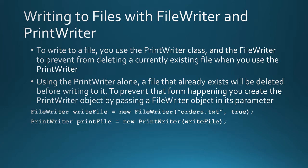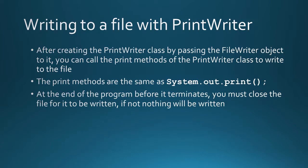To write to a file, you use the PrintWriter class, and then you use the FileWriter class to prevent from deleting a currently existing file when you use the PrintWriter. Using the PrintWriter alone, a file that already exists will be deleted before writing to it. To prevent that, you can create the PrintWriter object by passing a FileWriter object in its parameter. So: FileWriter writeFile = new FileWriter("orders.txt", true), meaning we will be appending to the file. Then PrintWriter printFile = new PrintWriter(writeFile). After creating the PrintWriter by passing the FileWriter object, you can call the print methods to write to the file. At the end of the program, before it terminates, you must close the file for it to be written — if not, nothing will happen.